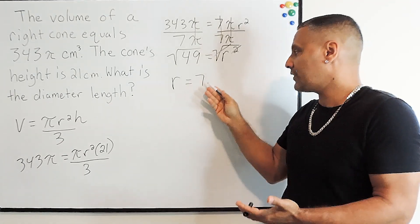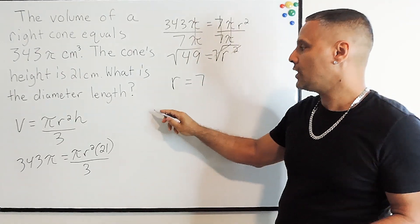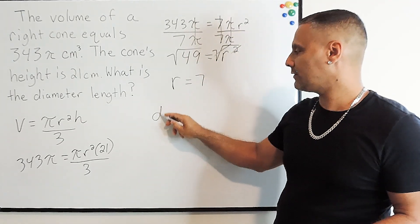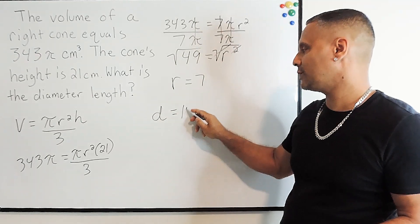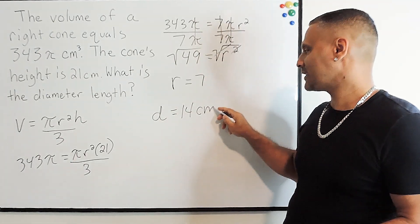Now all we have to do is double the 7, and that would give us 14. So the diameter length of this cone is equal to 14 centimeters.